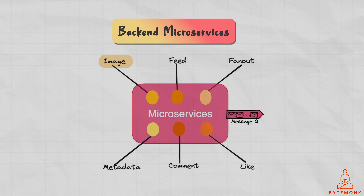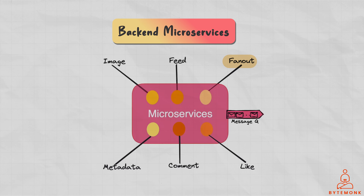The image service handles image processing and storage, including image uploads, retrievals, and deletions. It interacts with the Blobstore for image storage and retrieval, and communicates with the metadata database to update image metadata such as captions, locations, and tags. The feed service generates news feeds for users based on their follows and likes. It communicates with the metadata database to retrieve information on the users and images that a given user follows or has liked, and uses this information to generate a personalized feed. When a user likes or comments on a post, the like service or comment service will add the corresponding event to the distributed queue. The fanout service will then consume the event from the queue and distribute it to all downstream services interested in the event — for example, if a user likes a post, the fanout service will distribute the event to the feed service.